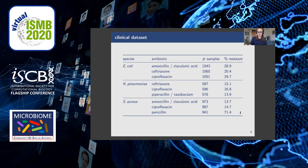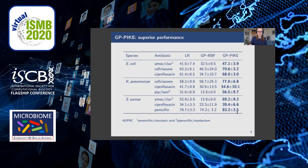We define a binary classification scenario where the positive class is the resistance class and the negative class is the susceptible class. In most cases, the positive class is in the minority, with between 10 and 30 percent of samples being resistant, but we have one case where the resistance class is in the majority. We compare the performance of our GP-PIKE method to two other classifiers: logistic regression, which is commonly used in MALDI-TOF-based machine learning, and a Gaussian process with the RBF kernel. We report the average precision values to account for the strong class imbalances, and for each of the nine scenarios, we achieve superior performance with our GP-PIKE method.